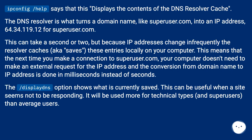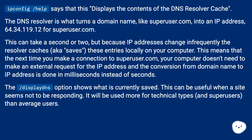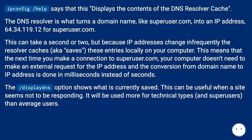IPconfig help says that this displays the contents of the DNS resolver cache. The DNS resolver is what turns a domain name, like superuser.com, into an IP address — 64.34.119.12 for superuser.com. This can take a second or two, but because IP addresses change infrequently, the resolver caches — aka saves — these entries locally on your computer. This means the next time you make a connection to superuser.com, your computer doesn't need to make an external request for the IP address.